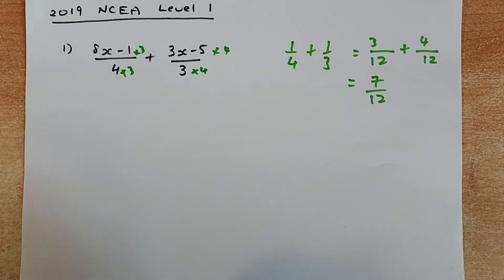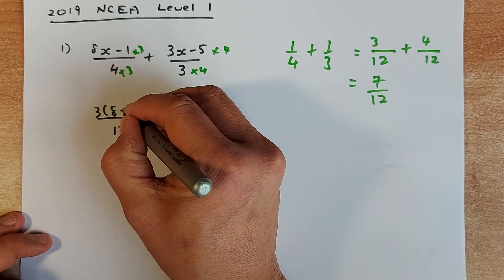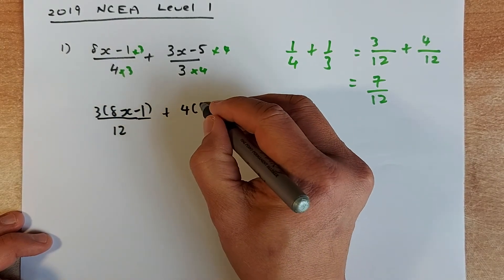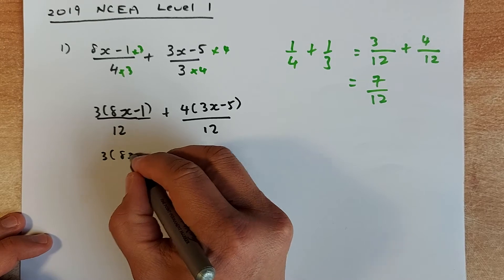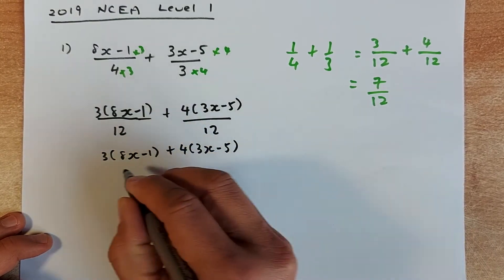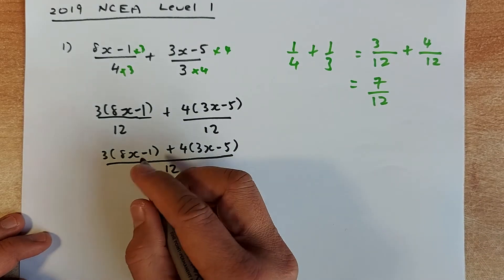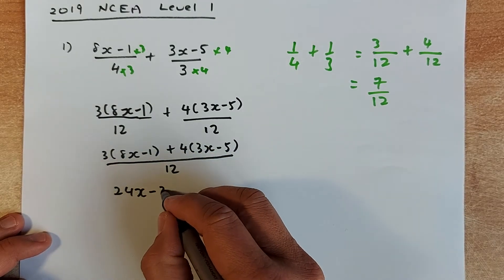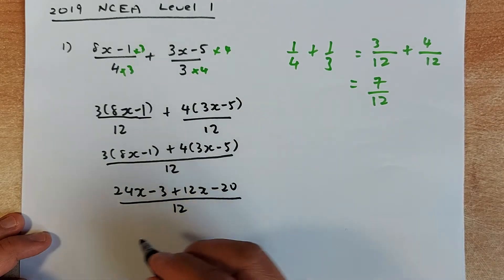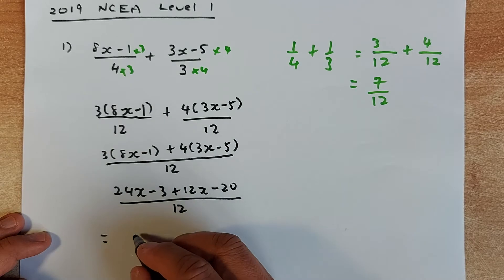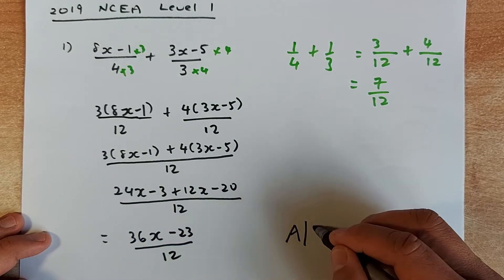Your denominator is going to be 12. On one side you put the bracket 3 multiplied by (8x minus 1), and on the other side 4 multiplied by (3x minus 5), all over 12. Combine them: 3(8x minus 1) plus 4(3x minus 5) over 12. Expand: 3 times 8x is 24x, 3 times minus 1 is minus 3, 4 times 3x is 12x, 4 times minus 5 is minus 20. Collecting like terms: 24x plus 12x is 36x, and minus 3 minus 20 is minus 23, giving 36x minus 23 over 12. That would be an achieve or merit in NCEA Level 1.